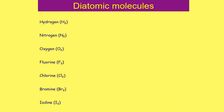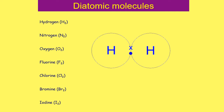We'll now look at each diatomic molecule and how it forms covalent bonds, because even though they're all made of two atoms, the number of bonds differs for each. Hydrogen, H₂: each hydrogen has one electron in its outer shell, which needs two to be complete. Both hydrogen atoms share one electron each, giving each of them two electrons in their outer shell and providing stability.